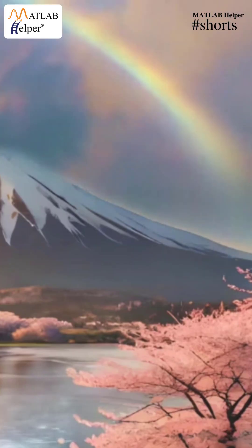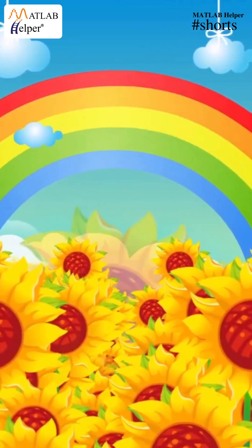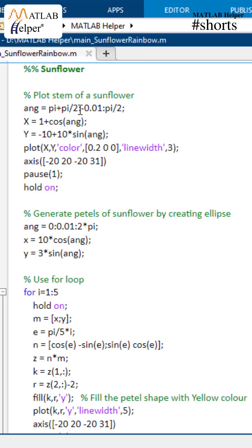Hello everyone, get ready to transform your screen into a canvas of nature as we dive into the code for creating a beautiful sunflower and vibrant rainbow using MATLAB. Let's start with the sunflower. First, we will create the stem of the sunflower.